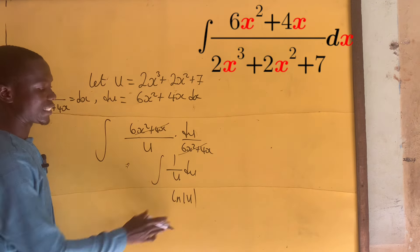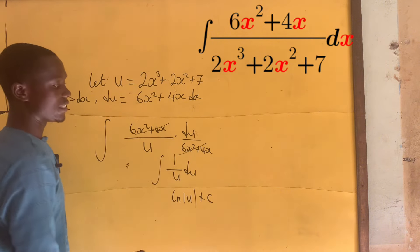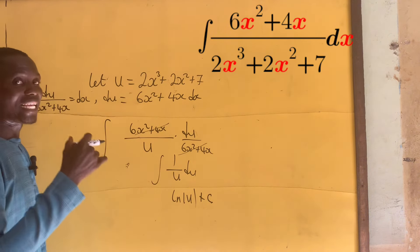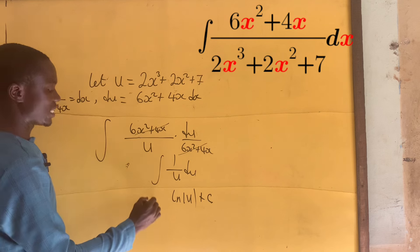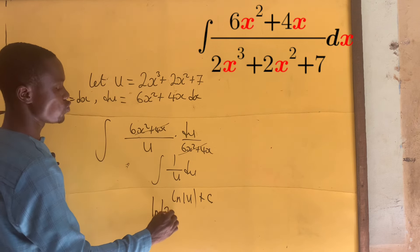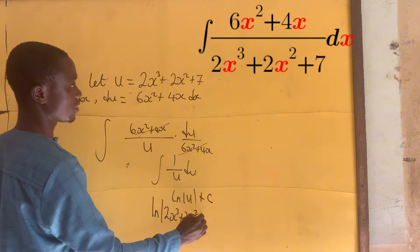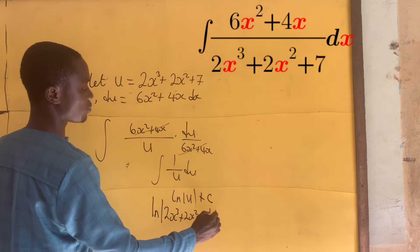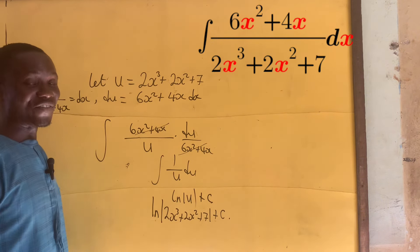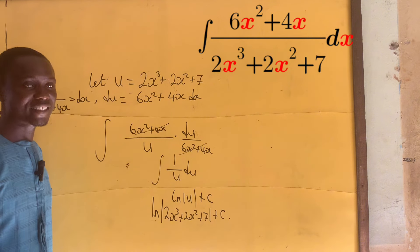And this gives us ln of u — that is the natural log of u plus C. We bring in the integration constant because it is an indefinite integral. So our final answer is ln of 2x cubed plus 2x squared plus 7 plus C. Thank you for watching — please like, share, subscribe and leave your comments. See you next time!